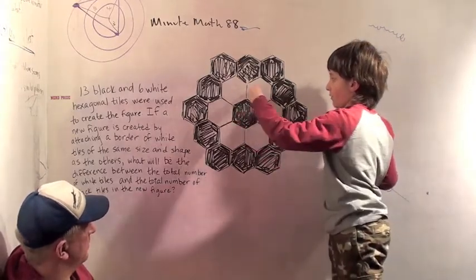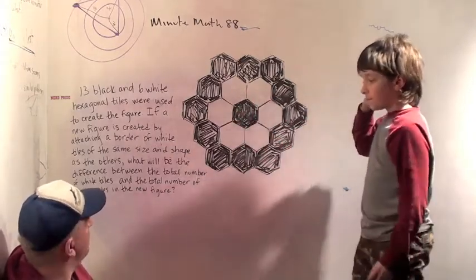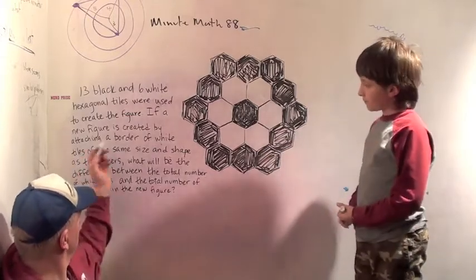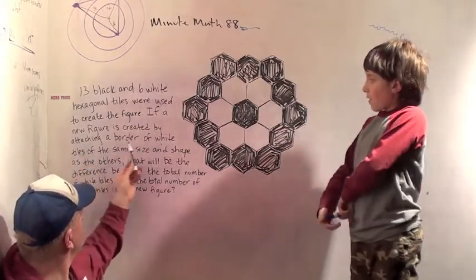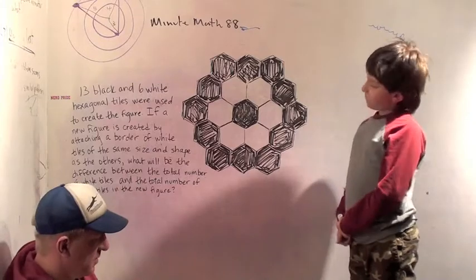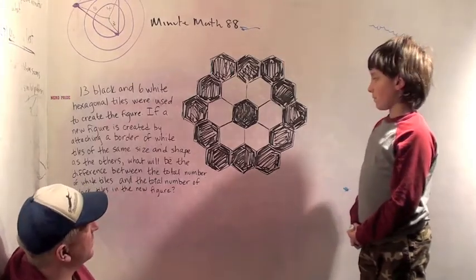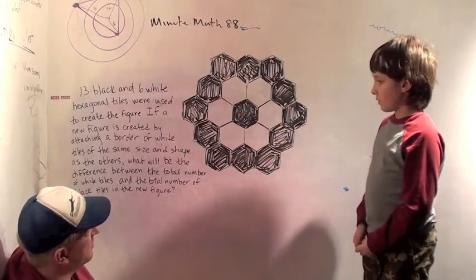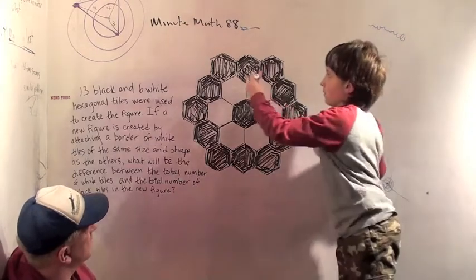Six. One, two, three, four, five, six. Okay, so when we build the new figure by attaching a border of white tiles, we've got to figure out how many white tiles there are going to be on the border. Do you want to draw a few to give yourself a little...